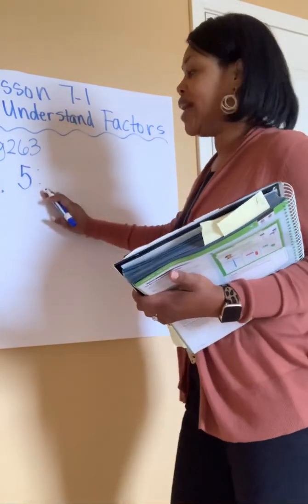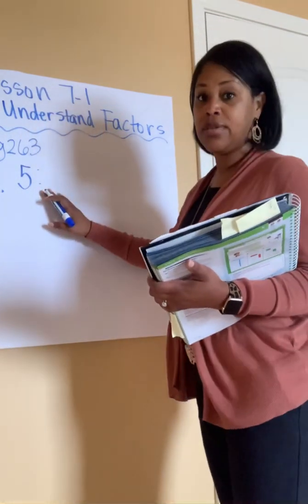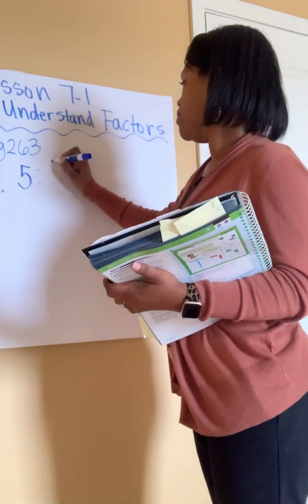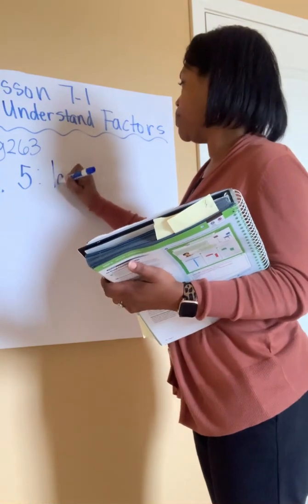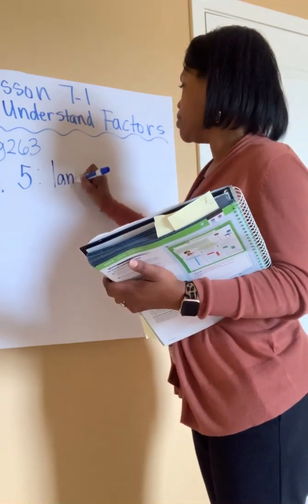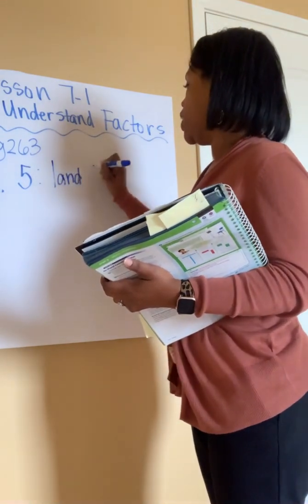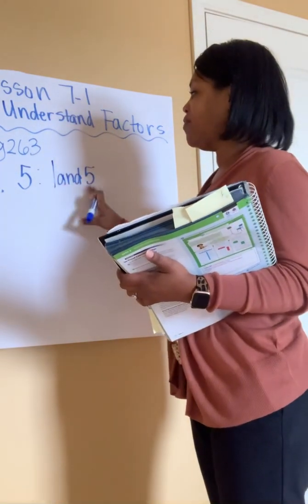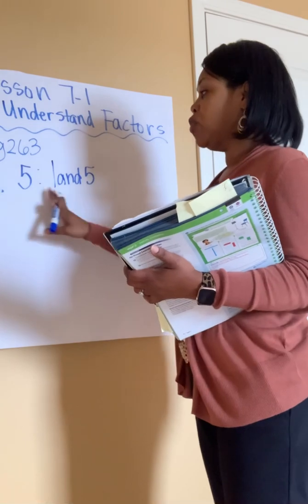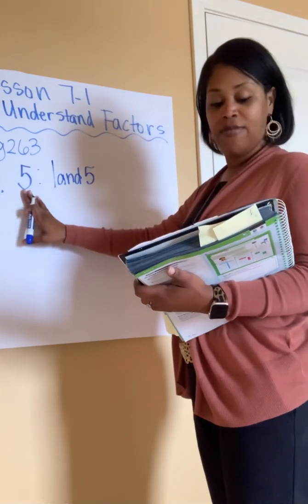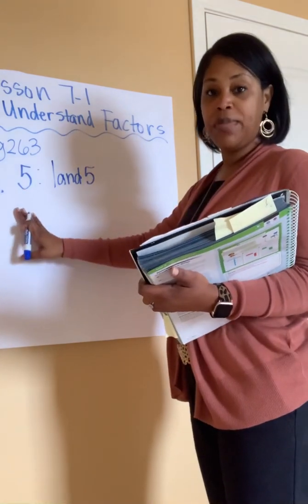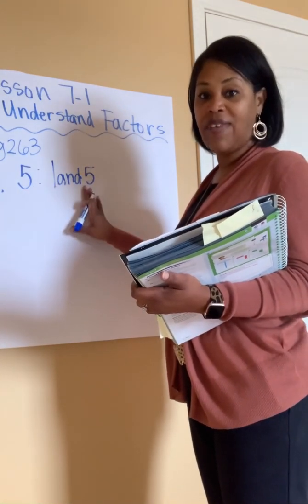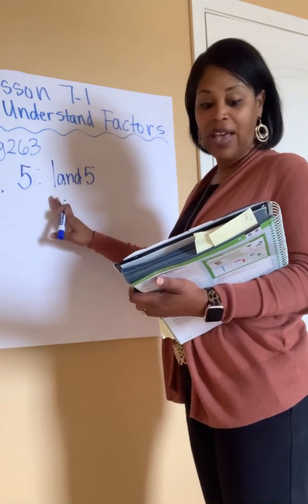So the factor pairs for 5 is 1 and 5. So 1 and 5 will give you 5, which means 1 times 5 equals 5.